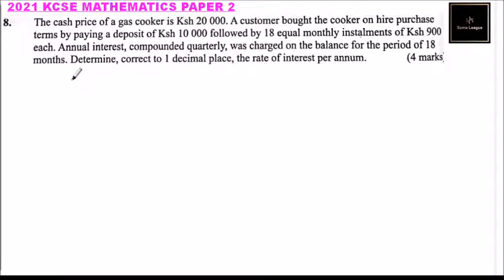Annual interest compounded quarterly was charged on the balance for the period of 18 months. Determine, correct to one decimal place, the rate of interest per annum.